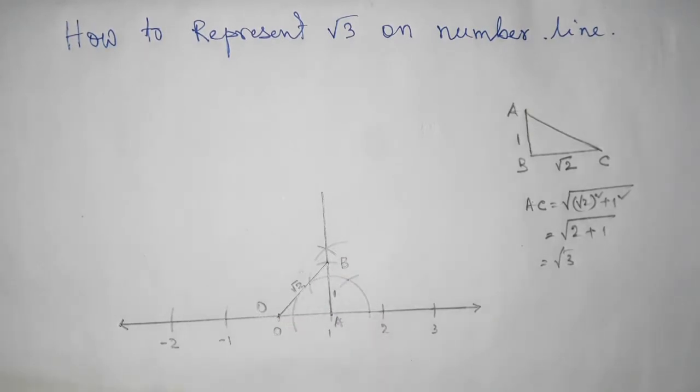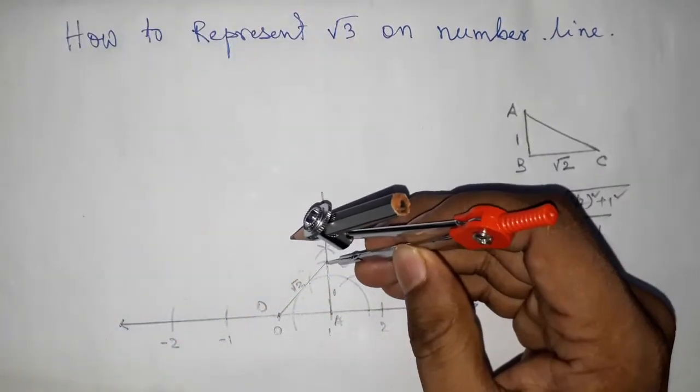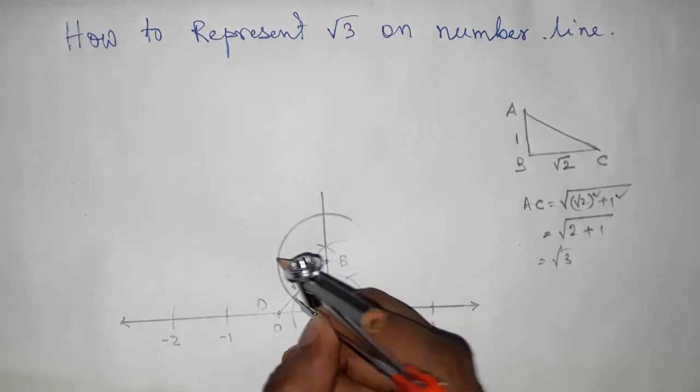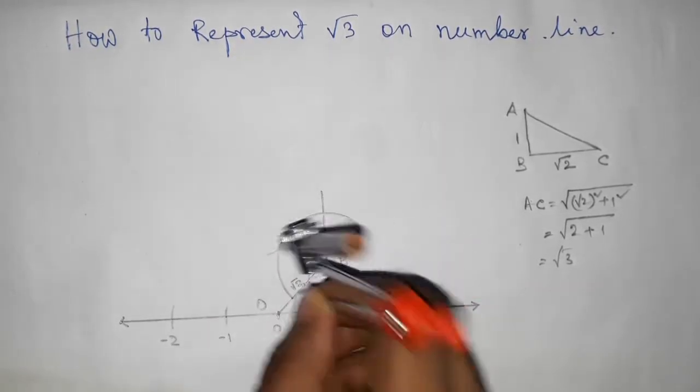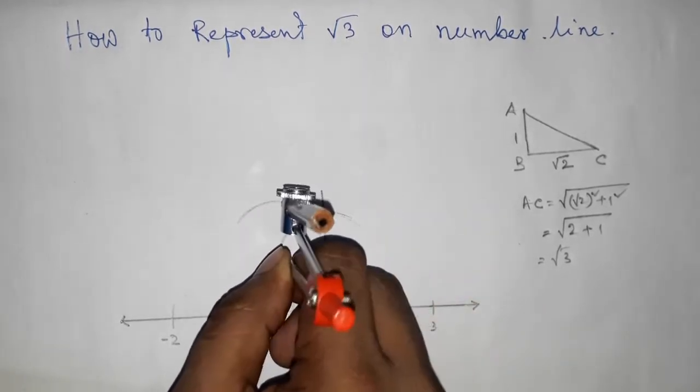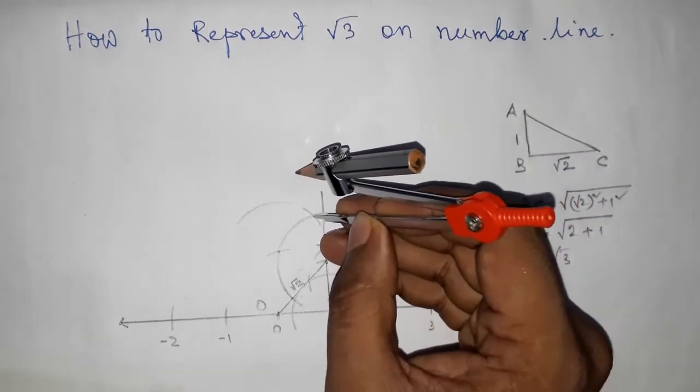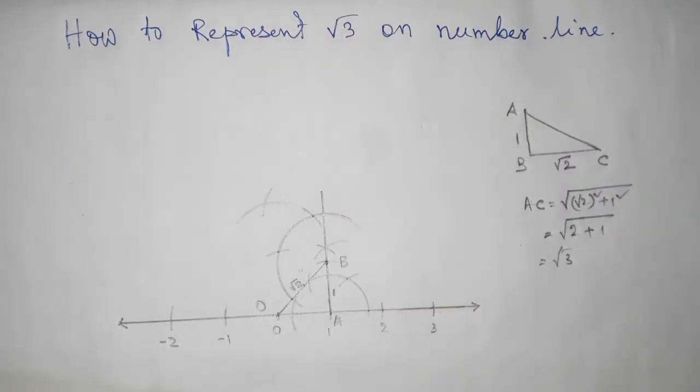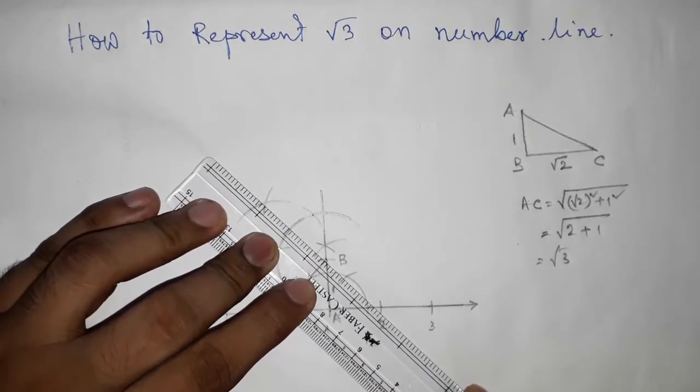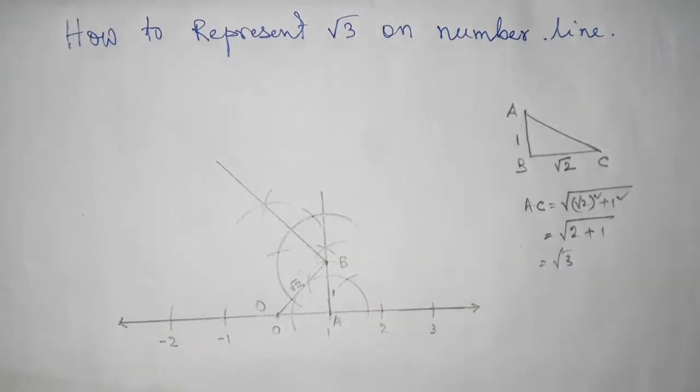Next, we have to draw a 90 degree angle on the point B. If you don't know how to draw a 90 degree angle, then first watch my video which I gave in my channel. Now drawing 90 degree angle on the point B, joining this. So we get a 90 degree angle on the point B.